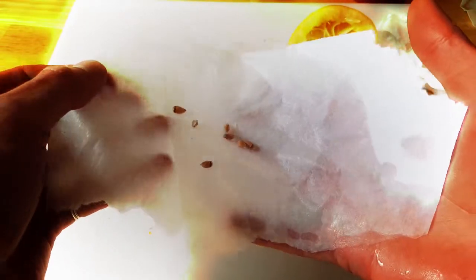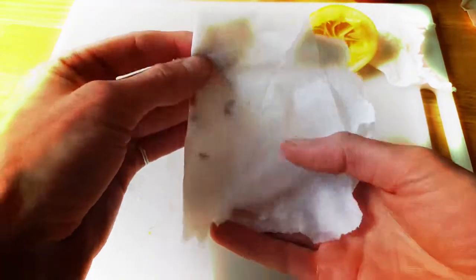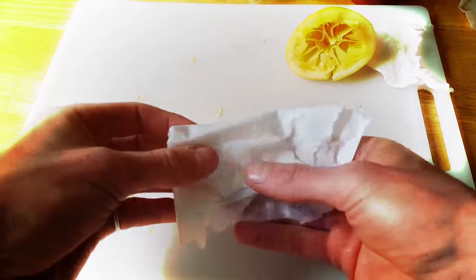Once you've got the whole casing off the seed, put them in a wet paper towel, fold it over a few times, and stick the whole thing in a ziploc bag. Seal the bag, and in a couple of weeks you should get sprouts like this.